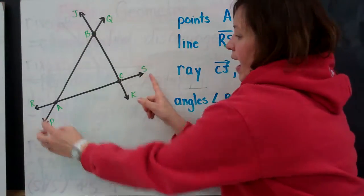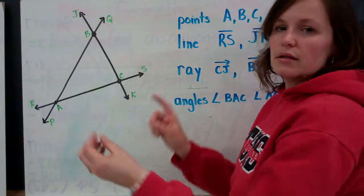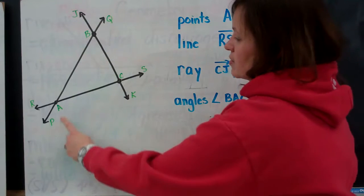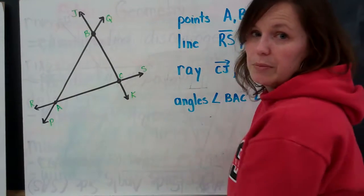Now, on line RS, I have a line segment. And remember, a line segment is the section of the line that is identified by two points. So, I have point A and point C. So, A, C would be my line segment.